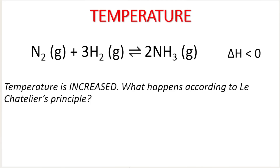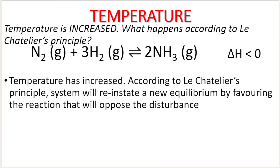So if my example says temperature is increased — what happens according to Le Chatelier's principle? We start off by saying temperature has increased, which basically disturbs equilibrium. According to Le Chatelier's principle, the system will reinstate a new equilibrium by favoring the reaction that will oppose the disturbance.